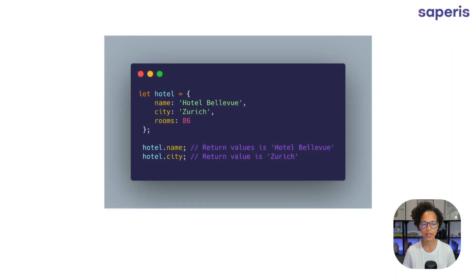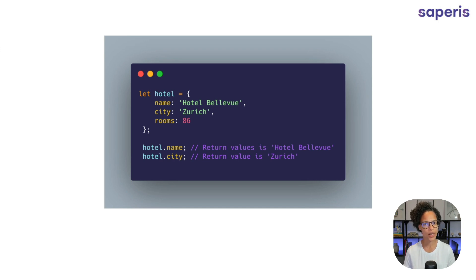Properties. Here we see the hotel object and it contains three properties: name, city, and rooms. We can store values in those properties, so they're always a key and value pair. We see that name has the value of Hotel Bellevue, city is Zurich, and rooms is 86. Little quiz question if you've been watching our videos — why does 86 not have quotation marks? Let us know in the comment section below. Think of data types.